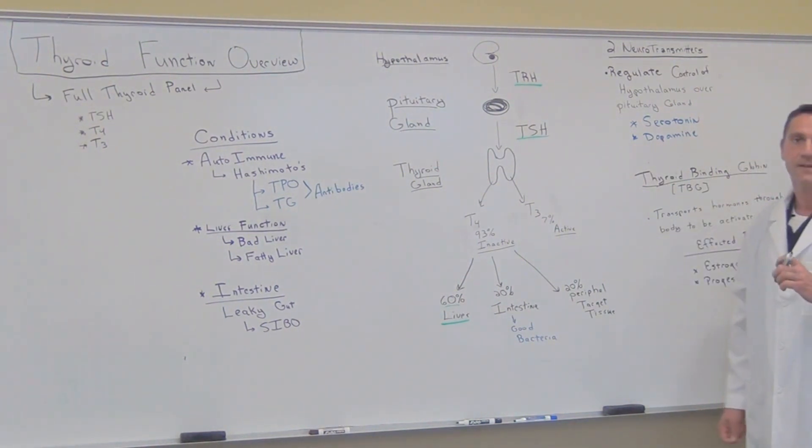Now, there's two neurotransmitters in the brain that regulate, very important, that regulate control of the hypothalamus over the pituitary gland, and that's serotonin and dopamine. That's why these two neurotransmitters are very, very important and essential for overall thyroid function.